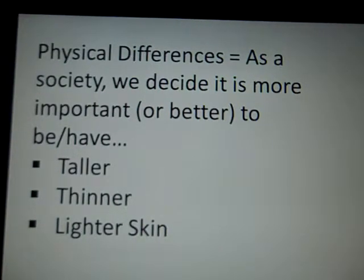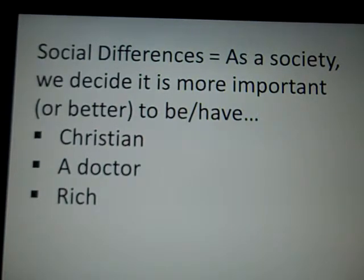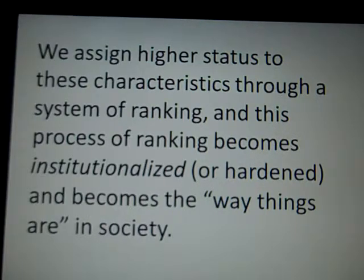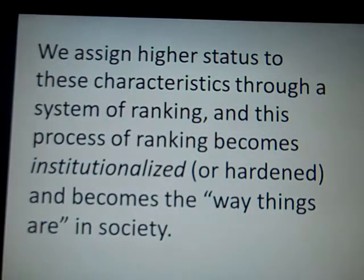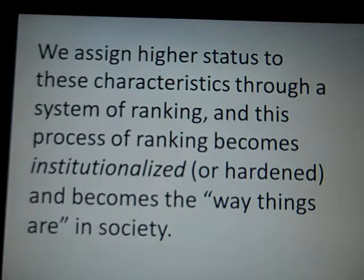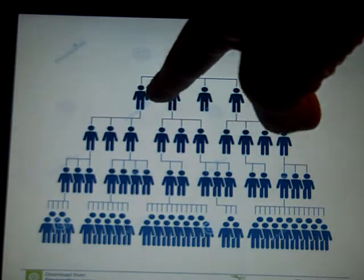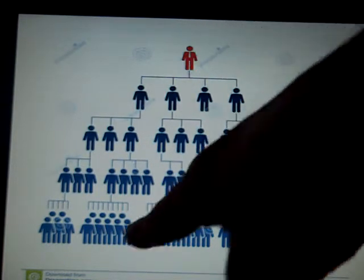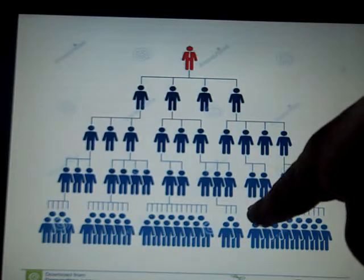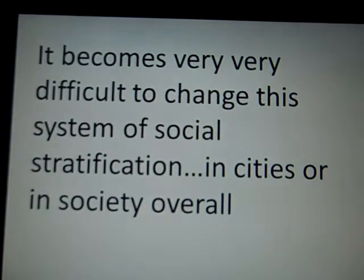Just to recap: we decide it's better to be taller, thinner, to have lighter colored skin; we decide it's better to be Christian, to be a doctor, or to be rich. Now, this process of assigning status and ranking these differences becomes hardened or institutionalized — it's like a big slab of concrete where you put your handprint in it and it dries that way. It stays that way. Everything is ranked hierarchically, and you can see it within an organizational structure from the person on top — the CEO — all the way down to entry-level people with very low status. It becomes very difficult to change this system of social stratification.